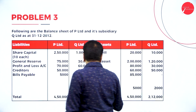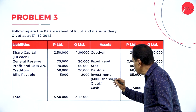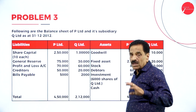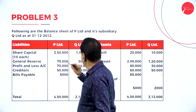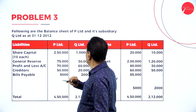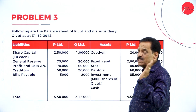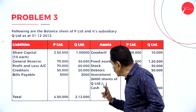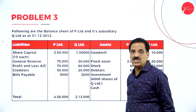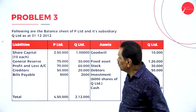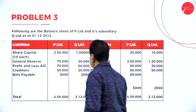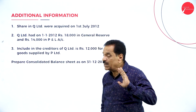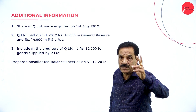P-Limited invested in 6,000 shares of Q-Limited, taking the majority. Q-Limited has a share capital of 1,00,000 rupees; divided by face value of 10, that gives 10,000 shares total. P-Limited acquired 6,000 shares. As per the balance sheet, shares in Q-Limited were acquired on 1st July — that is, after 6 months from January.